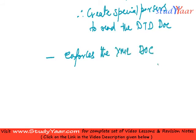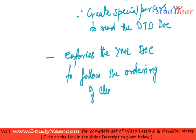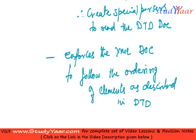The next and final limitation is that DTD enforces the XML document to follow the ordering of elements as described in DTD. Because of these limitations, we move on to something called XML Schema.